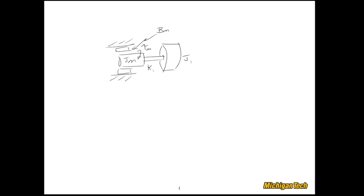Before we jump into generating the equations of motion with free body diagrams, it's worth just taking a look and getting a feel for what we should end up with. We have two disks, so we should have two second-order differential equations, and there should be some coupling between them via this torsional spring coefficient K1.